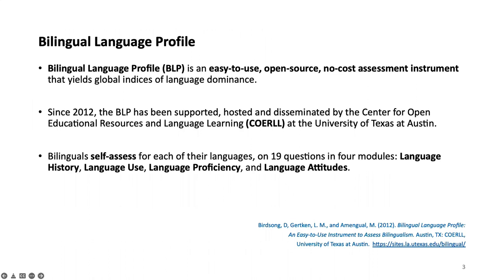The BLP is an easy-to-use, open-source, no-cost assessment instrument that yields global indices of dominance in one language over the other. This is our 10th year anniversary — we developed the BLP back in 2012, and since then it's been supported, hosted, and disseminated by CORAL, the Center for Open Educational Resources and Language Learning at UT Austin. Bilinguals self-assess for each of their languages on 19 questions covering four modules: language history, language use, language proficiency, and language attitudes.